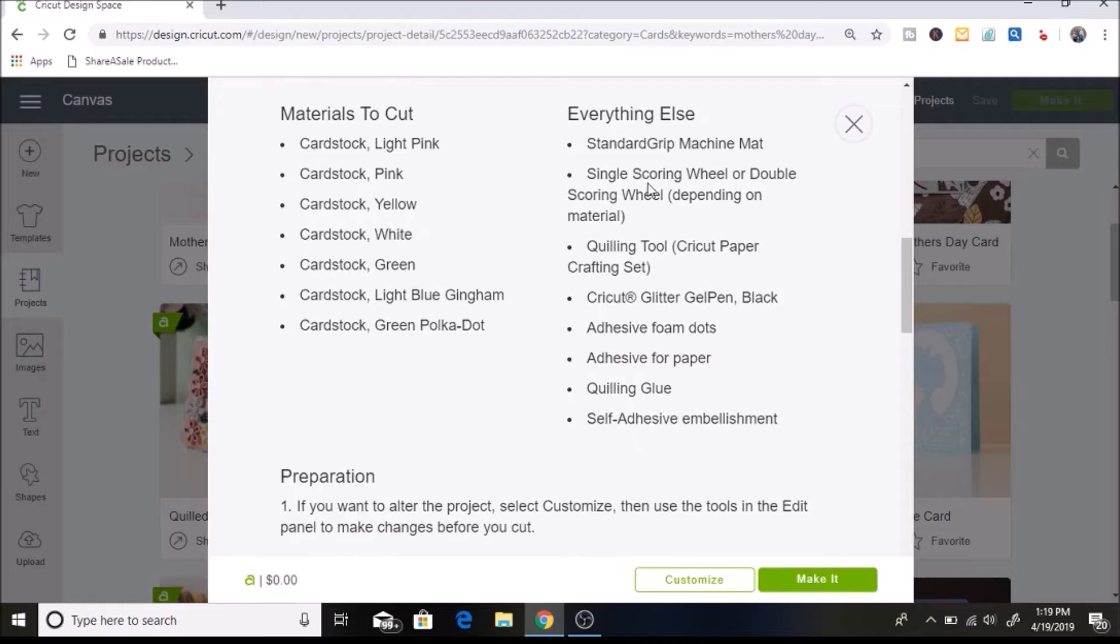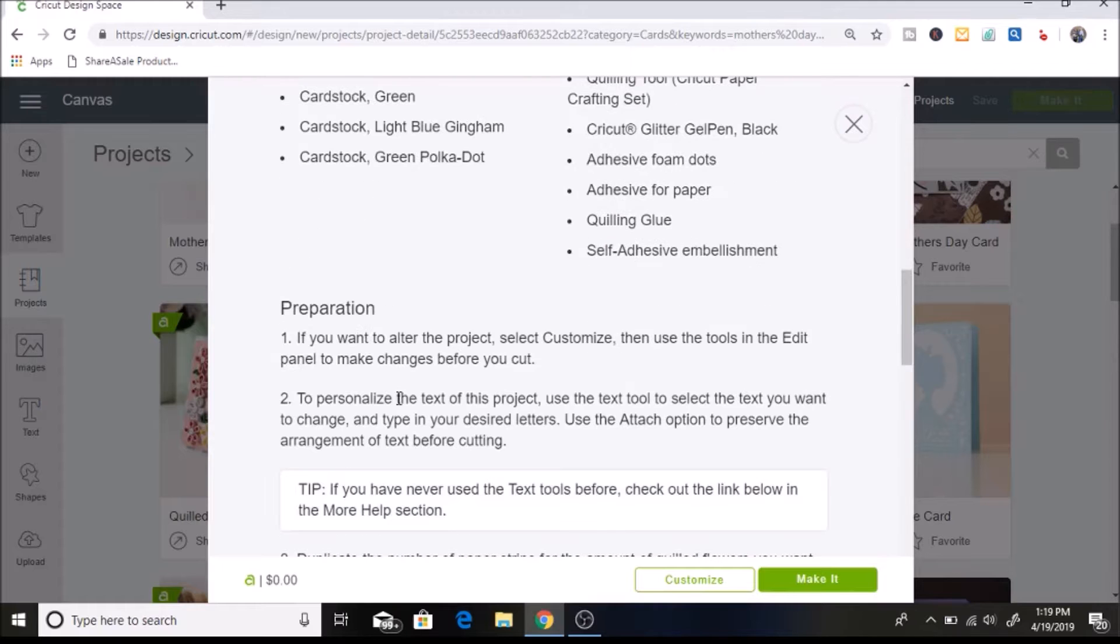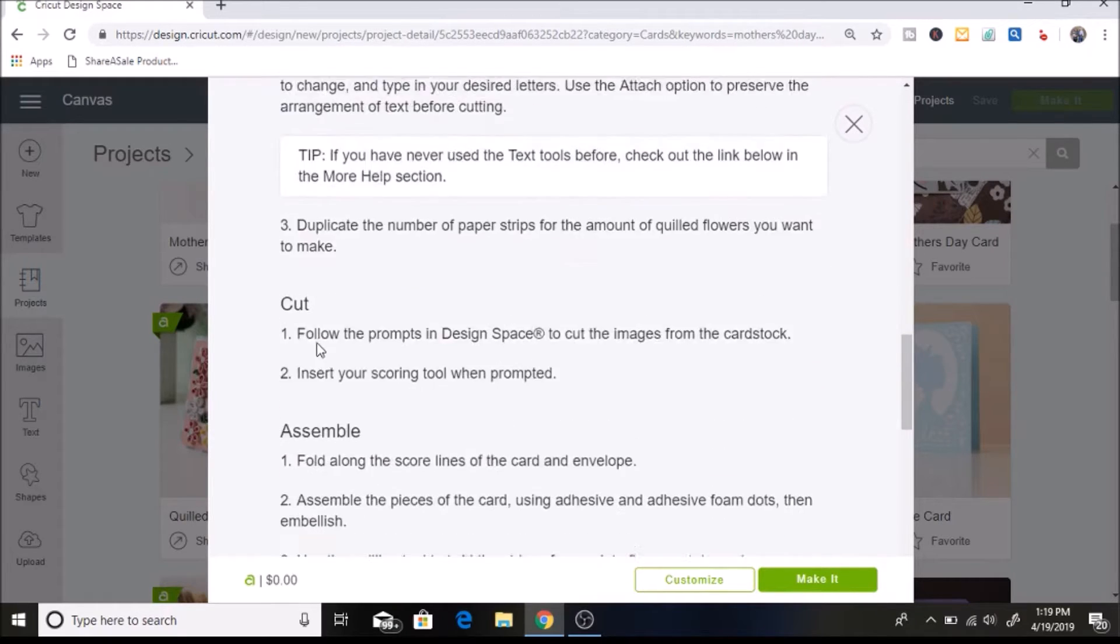And right here it says single scoring wheel or double scoring wheel. That is only if you have a Cricut Maker that you would use those. So I have the Cricut Explore Air. So with that machine, I need the scoring stylus. So you can still do this project if you don't have a Cricut Maker. You'll just need the scoring stylus. And then it shows everything you need for that. It'll also explain how to make it here.